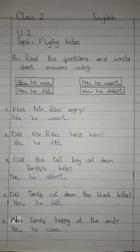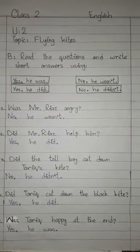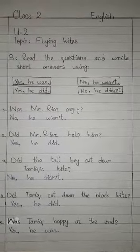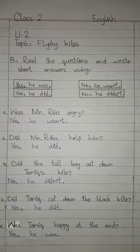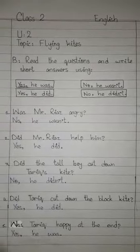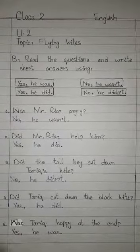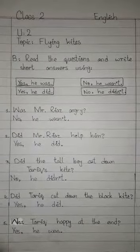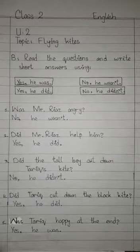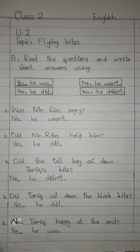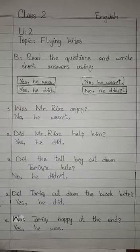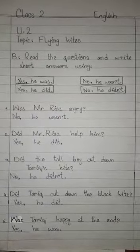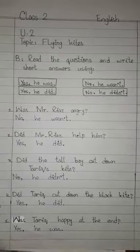Students, today I am going to teach you Progressive English of class 2. Our unit is unit number 2. Our topic is flying kites. Now open your books, page number 16, Question B.